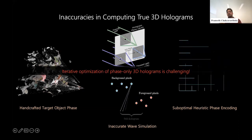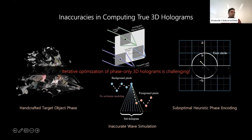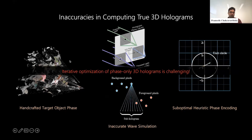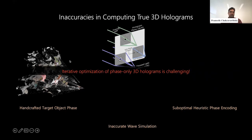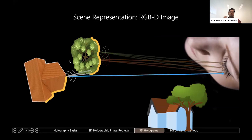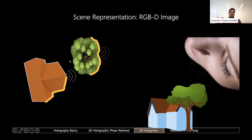To understand how to scale 3D hologram computation to a neural network-based optimization, it's important to look at common 3D scene representation methods. One of the most common is an RGBD image—a color image with a corresponding depth image—which you reproject into 3D space to get a point cloud to compute the hologram. Each visible point is treated as a spherical point light emitter. However, the rays around depth discontinuities are occluded by foreground objects, meaning the RGBD image does not capture what lies behind them.